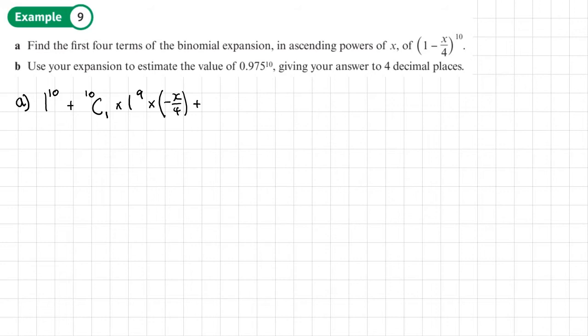So we leave it like that. Plus 10C2 times 1^8 times (-X/4)^2. Now, how many terms do we need? The first four terms. So we've got one, two, three, one more.